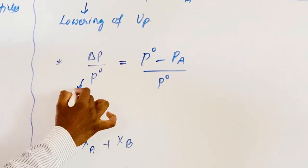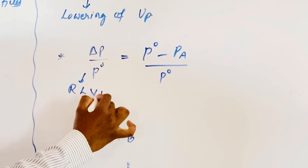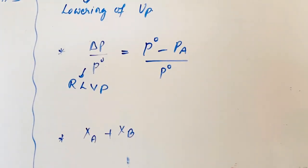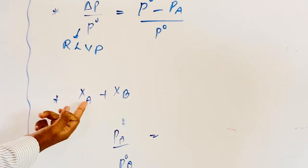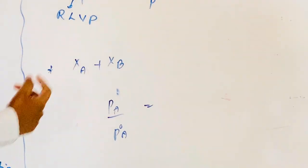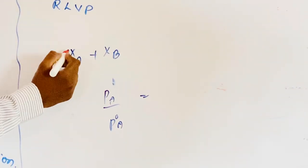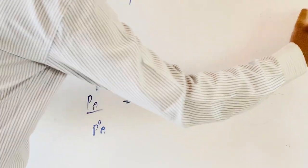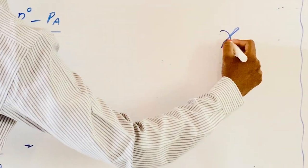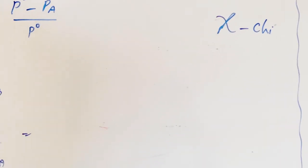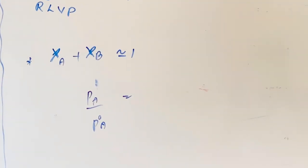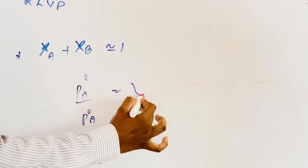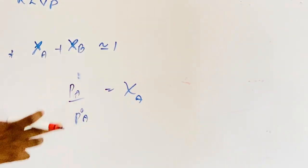In a binary solution, the solvent is represented by B and the solute is represented by A. Mole fractions are generally represented by the symbol chi (χ). χ_A plus χ_B is always equal to one. Therefore, the mole fraction of A in the solution is equal to P_A divided by P₀ of A.